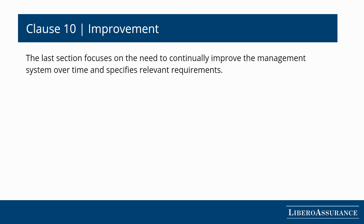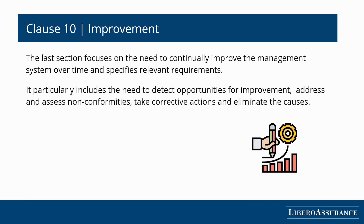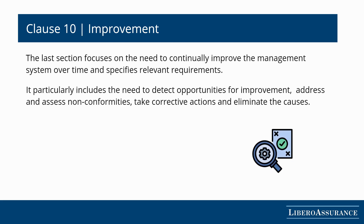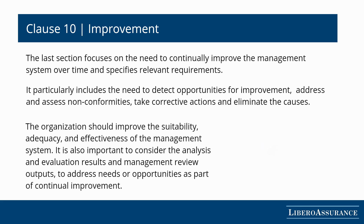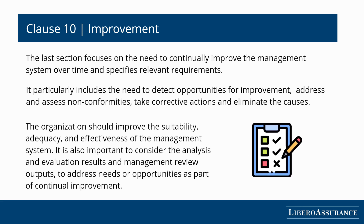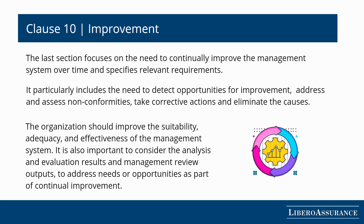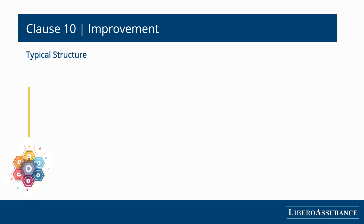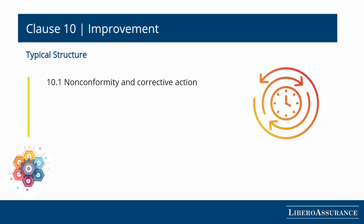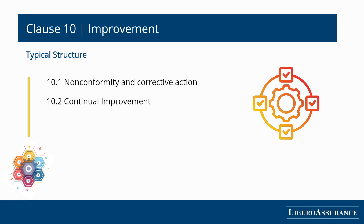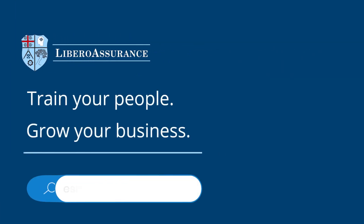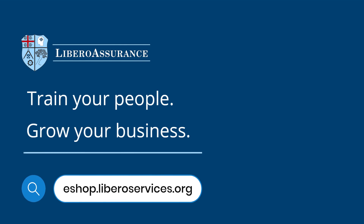Last but not least, section 10 focuses on the need to continually improve the management system. It emphasizes the need to identify areas for improvement, examine and assess non-conformities, implement corrective actions, and eliminate their causes. It is also critical to evaluate the outcomes of analysis and assessment, as well as the outputs of management reviews, in order to address needs or opportunities as part of continuous improvement. The 10th clause contains two subsections: non-conformity and corrective action, and continual improvement.